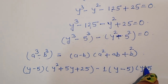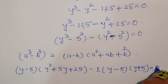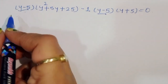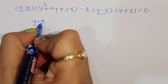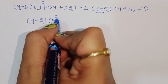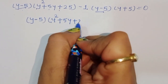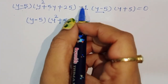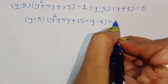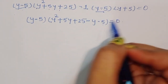For the remaining term, we apply the formula a squared minus b squared equals a minus b times a plus b, giving y minus 5 times y plus 5. So the full expression becomes: y minus 5 times y squared plus 5y plus 25, minus y minus 5 times y plus 5, is equal to 0.